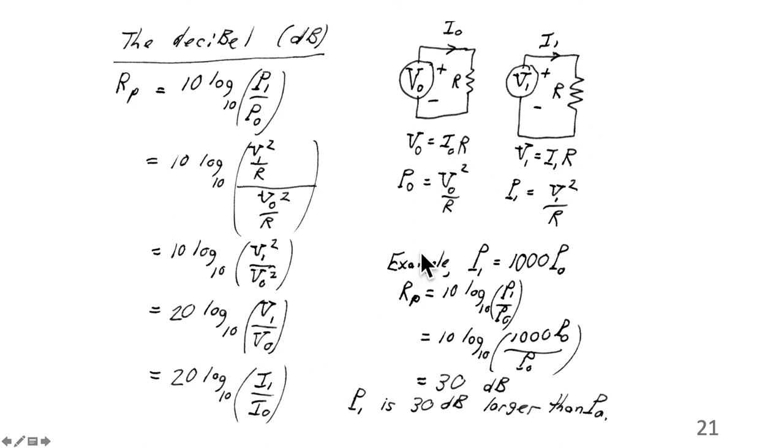Because V1 is I1R and V0 is I0R, then you can replace that by I1R and I0R, and the R's cancel and we're left with I1 over I0. So dB or decibel is the ratio of powers in dB. If you take a ratio of powers, then you evaluate the log with a 10. If you take a ratio of amplitudes, voltage or current, you put a 20 in front.